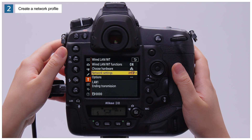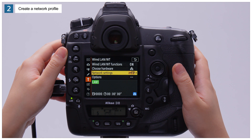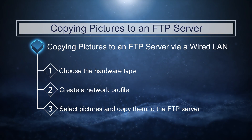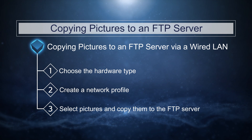The camera and FTP server are now configured for upload. Confirm that the network profile is displayed in green in the camera's Wired LAN WT display. The last step is to upload pictures to the FTP server.